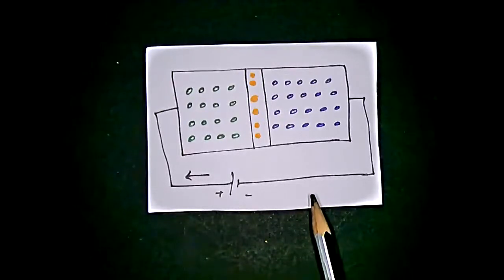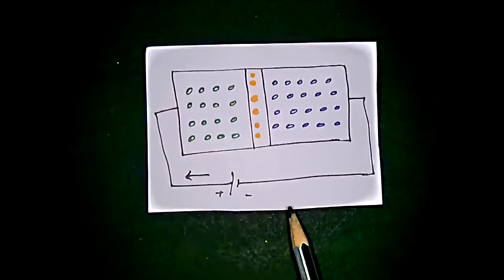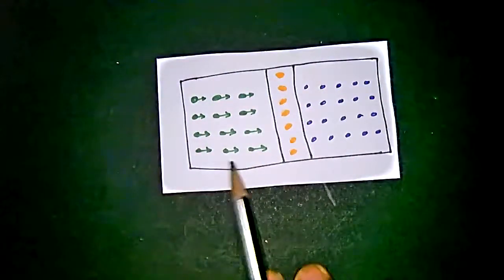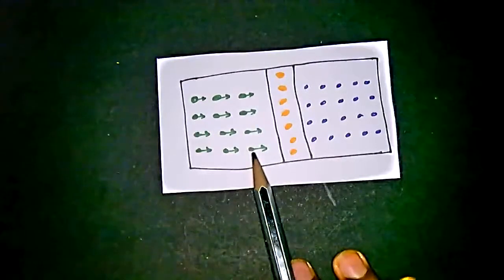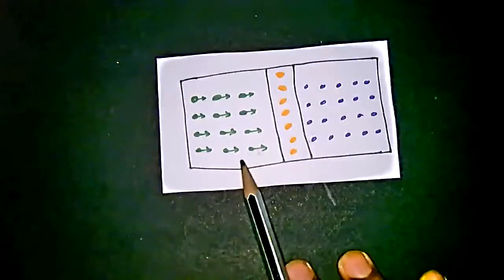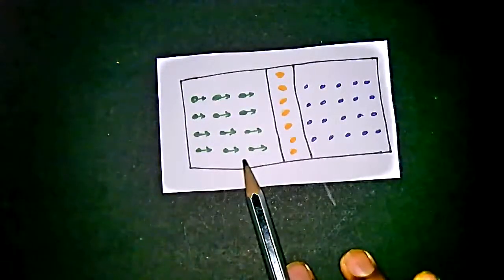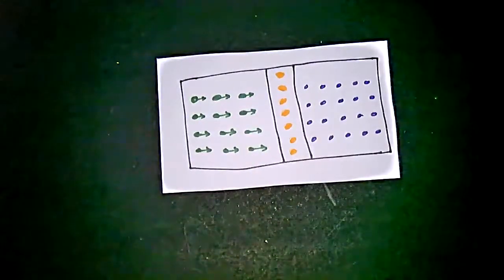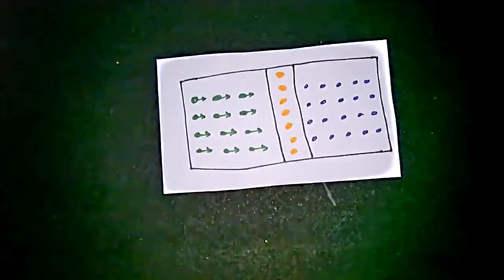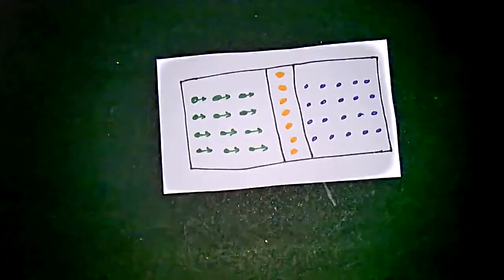We have to sequence the events for current flow. When we are applying the current flow, we are inserting holes into the P region. So first of all, we are injecting the holes into the P region. The minority carrier in the N region is the hole. So we are injecting the minority carriers — that is the first event.